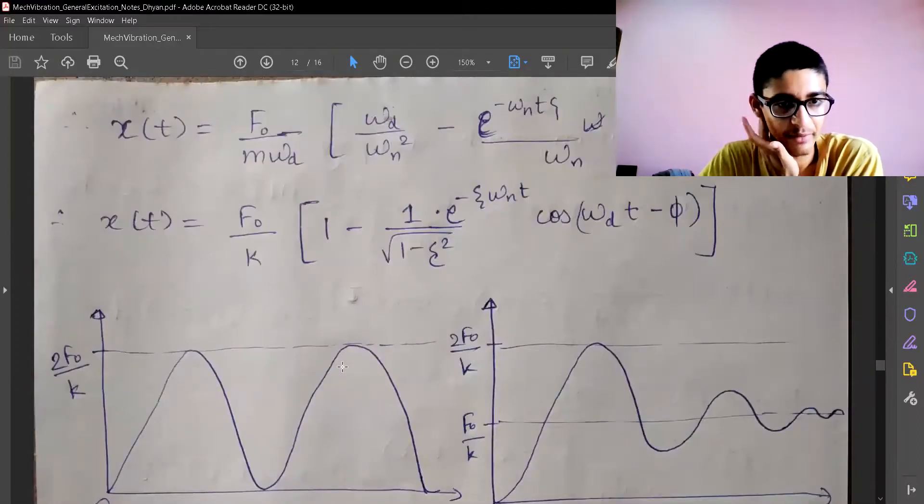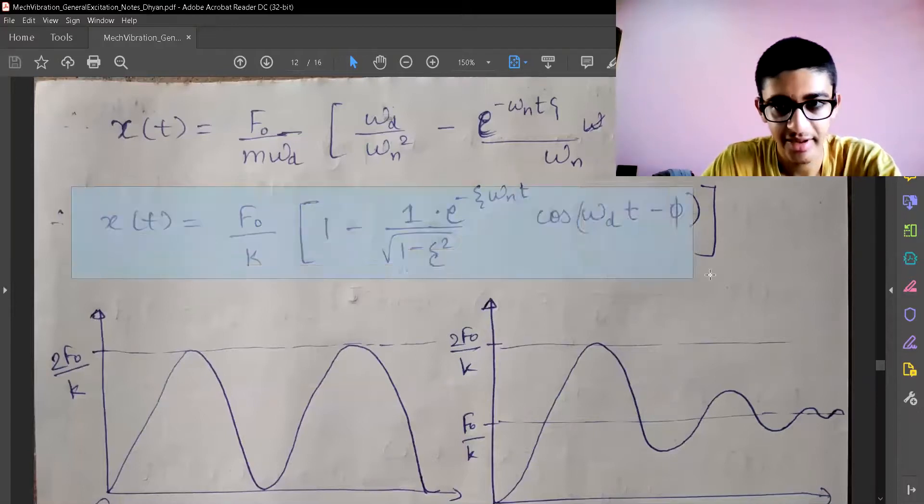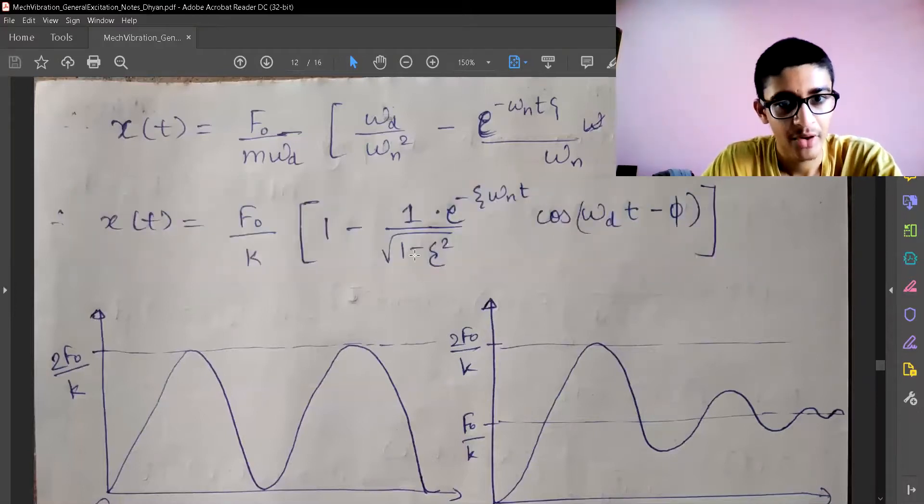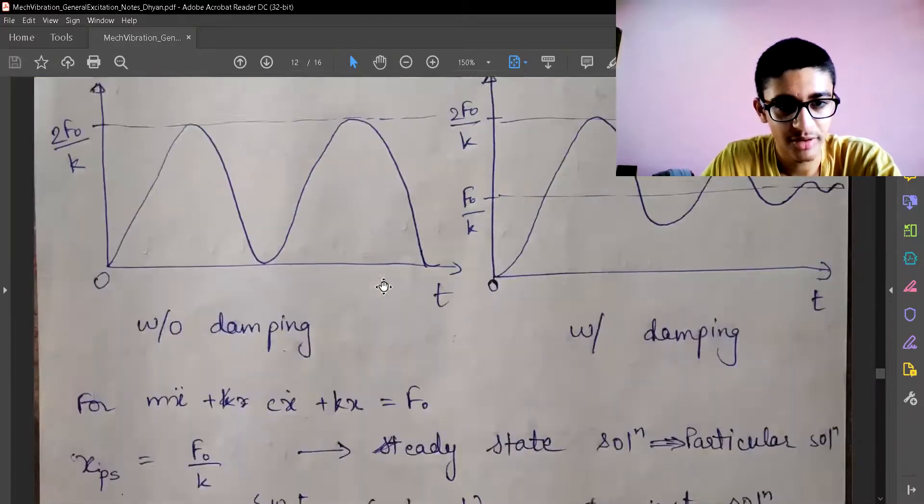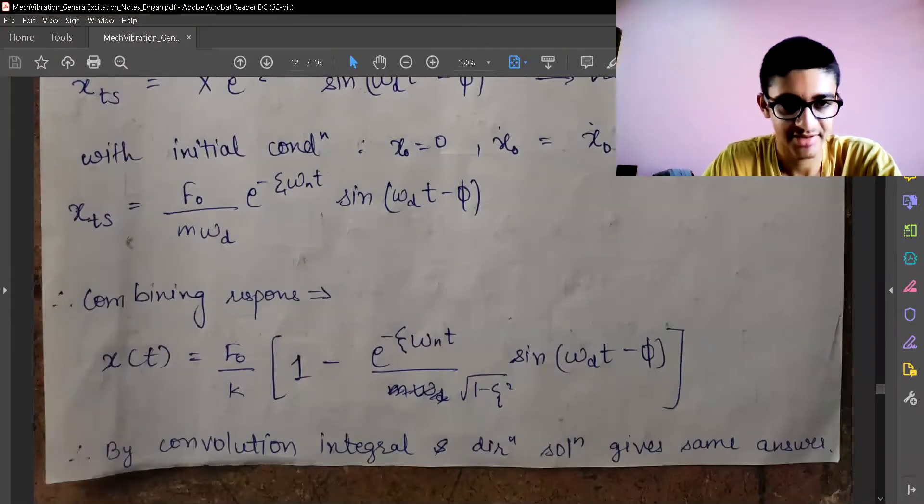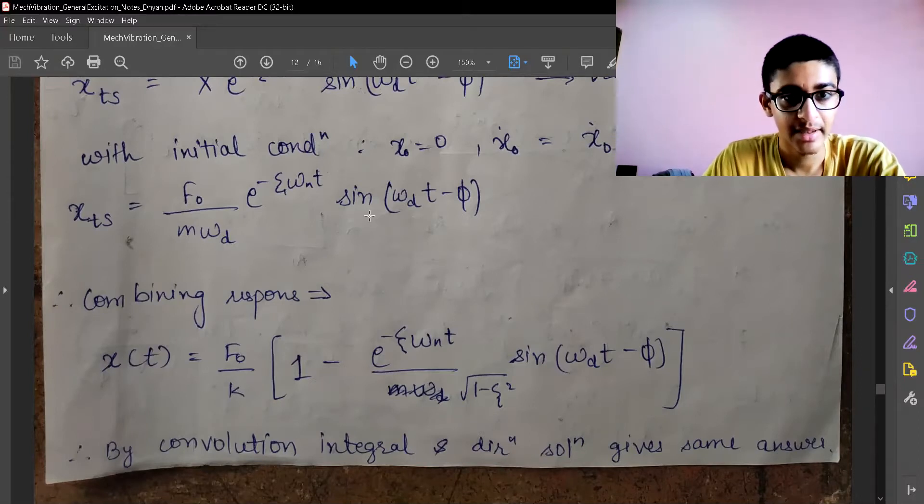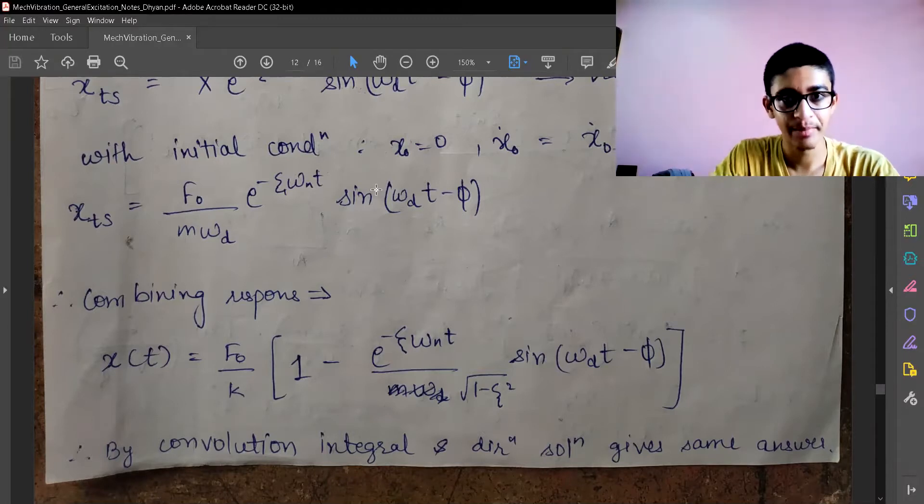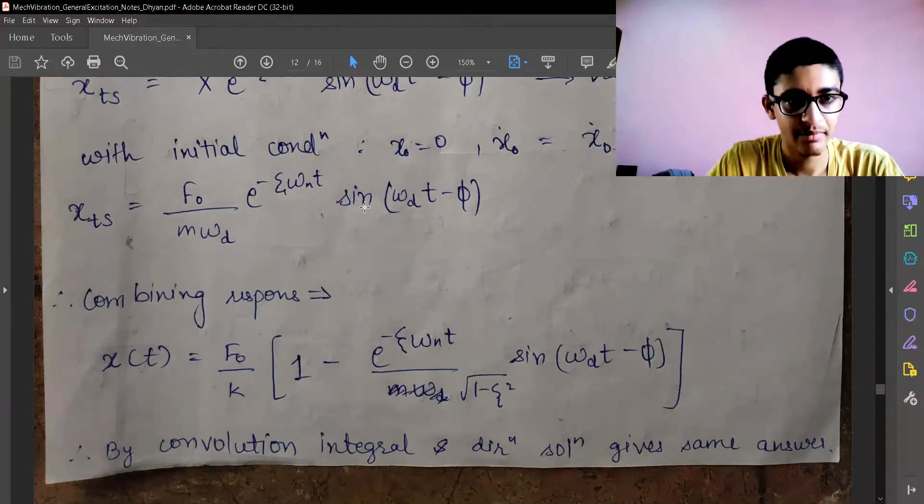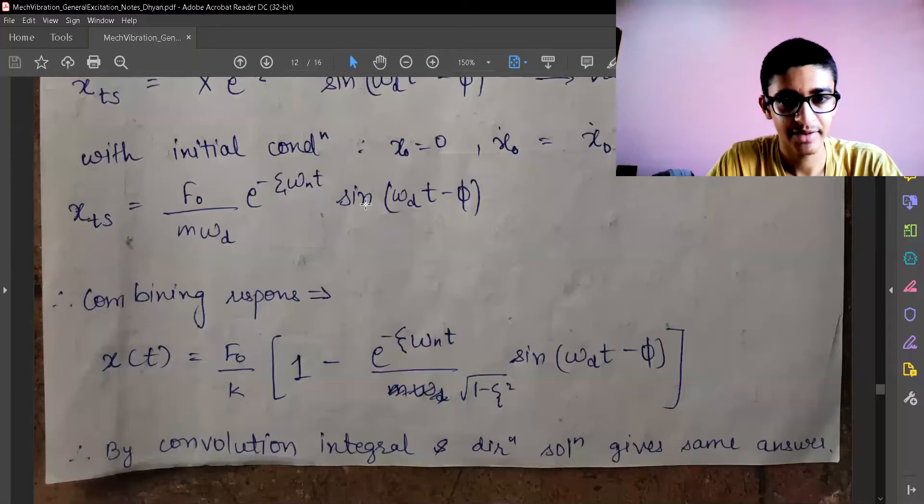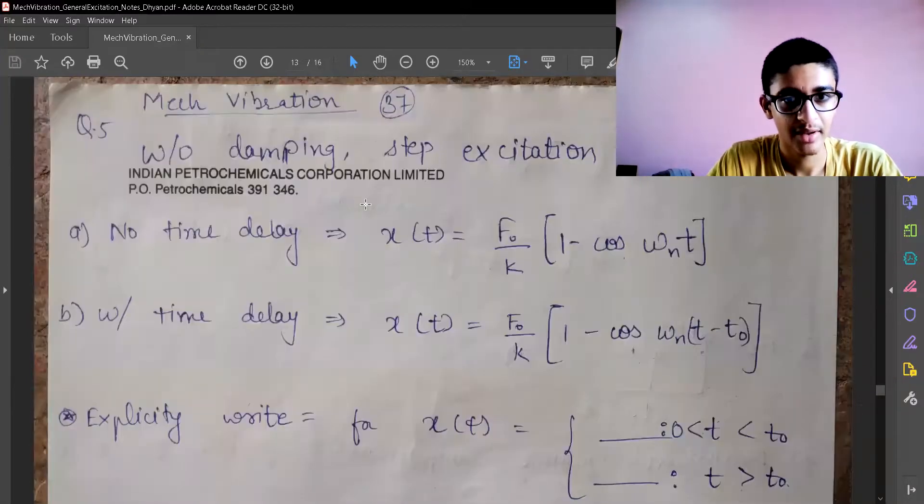The other way was directly using the convolution integral which was explained earlier. The beauty is both the responses are the same - by convolution integral and direct solution. We can use any of the concepts, but since integration is very easy for simpler functions, we can better use that type of concept to solve the answers. We'll stop over here.